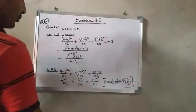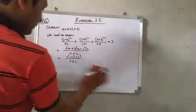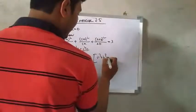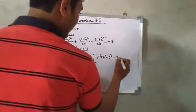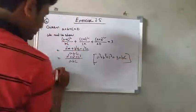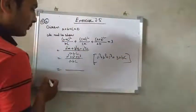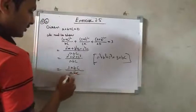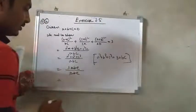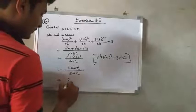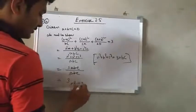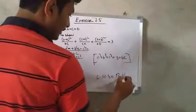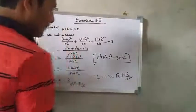We know that when A plus B plus C equals 0, then A cube plus B cube plus C cube equals 3ABC. So we can substitute 3ABC in place of A cube plus B cube plus C cube. This gives us 3ABC over ABC, and ABC cancels, giving us 3, which is the right hand side. Therefore, left hand side equals right hand side — proved.